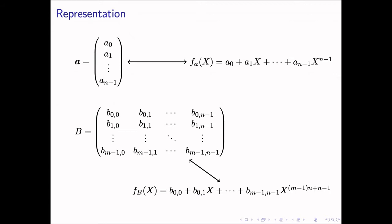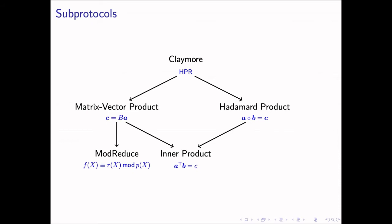The first step to construct the polynomial IOP is to represent the objects in HPR by polynomials. Recall that we chose the monomial basis representation. So for the vector A, the entries of the vector are taken as the polynomial coefficients. We denote the polynomial by F subscript A. For the matrix, we simply concatenate all the row vectors before treating them as the coefficients. Next, we will introduce how to implement the polynomial IOP for all the necessary operations, each in a sub-protocol. We introduce these sub-protocols from bottom to top, and finally compose them into the Claymore protocol.